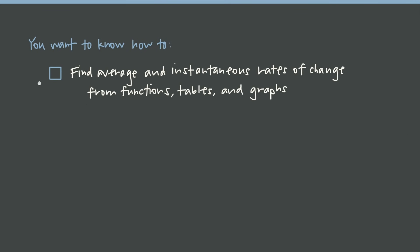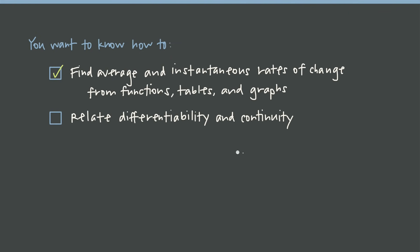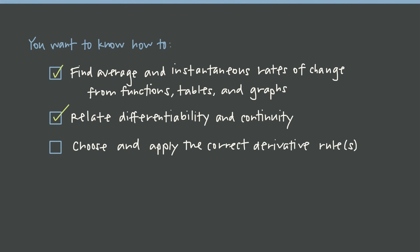That's it for Unit 2. Make sure you know how to find average and instantaneous rate of change from functions, tables, and graphs, and convert between all three. Be able to relate differentiability and continuity — including continuity, discontinuity, smoothness, and differentiability at a point. Finally, be able to identify and correctly apply the right derivative formula — power rule, product rule, quotient rule, or combinations. Once you're done with Unit 2 practice, jump into Unit 3, which covers the chain rule.